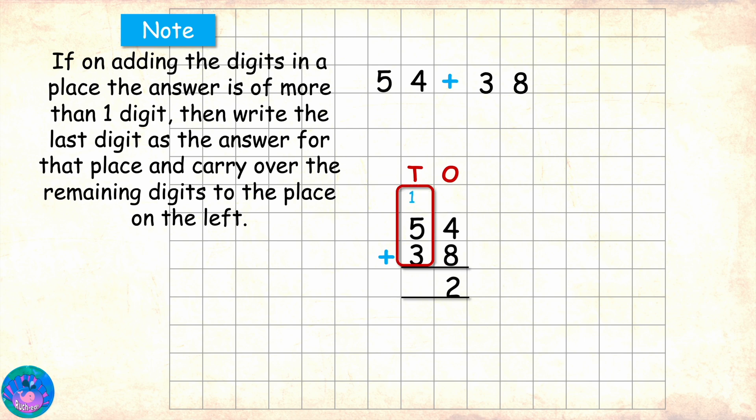Correct. Then we move to the tens place. Here we have 1, 5 and 3. 1 plus 5 is 6 and 6 plus 3 is 9, which is the answer for the tens place. So, 54 plus 38 is 92. Very good.